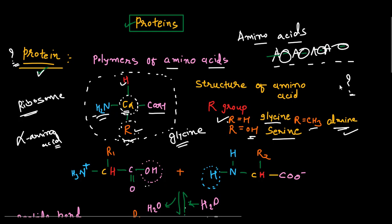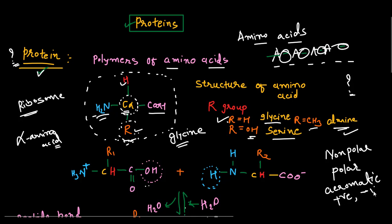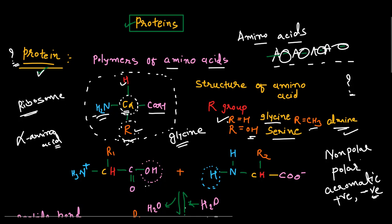Amino acids can also be classified in different ways based on their R groups. If the R group is non-polar, it is called a non-polar amino acid. If the R groups are polar, or aromatic, or contain positively charged groups, or negatively charged groups, the amino acids are classified accordingly. You can check my other videos for more detail on amino acid classification.